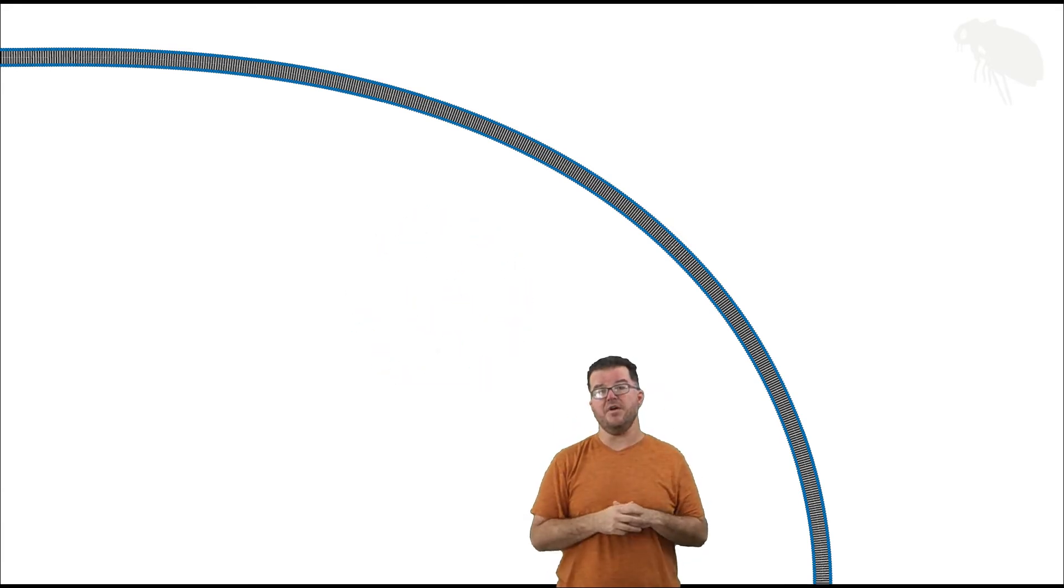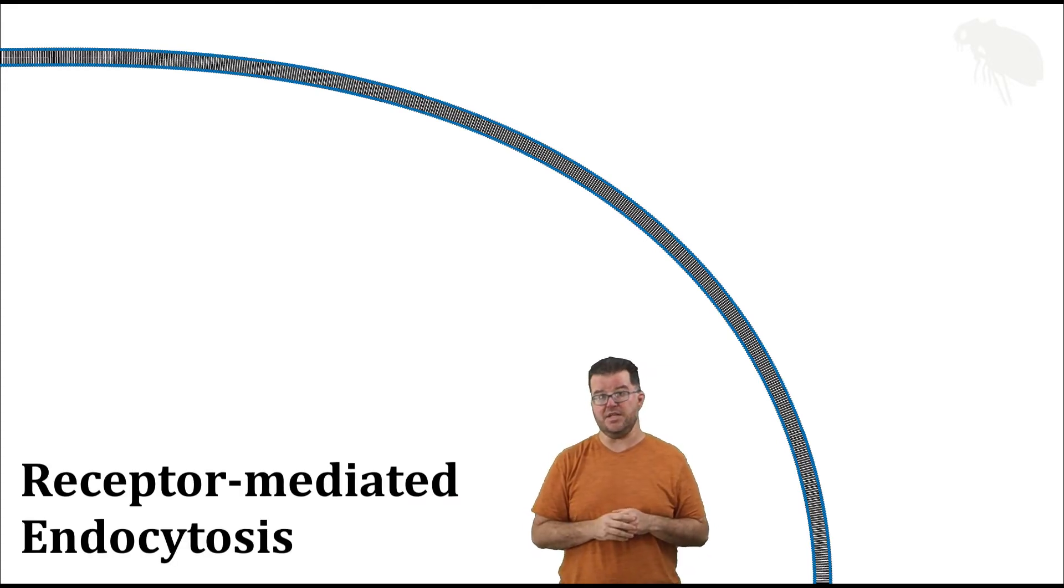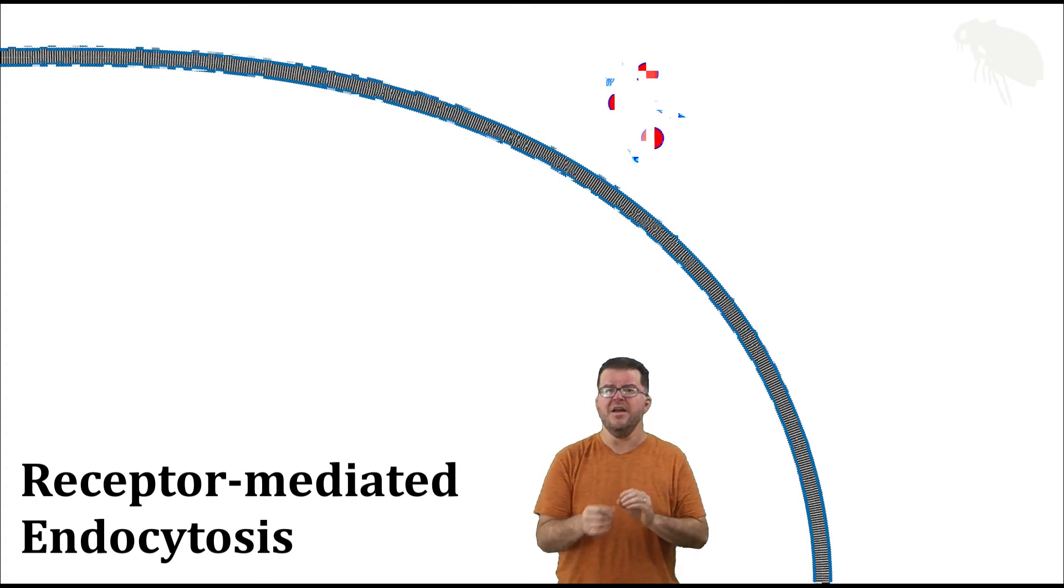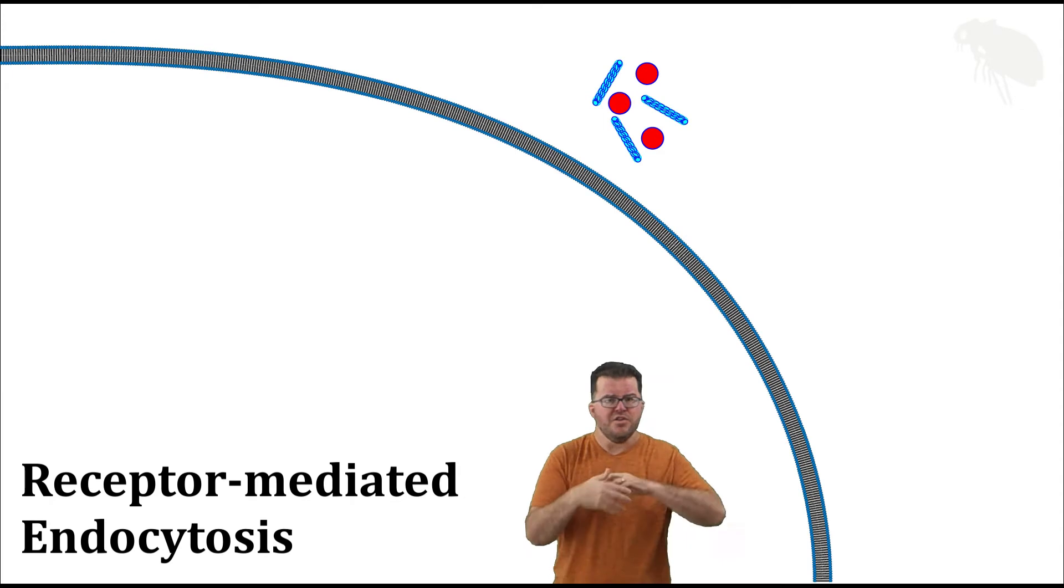The third type of endocytosis is called receptor-mediated endocytosis. Now, at a glance, it looks superficially similar to pinocytosis, but with an important distinction. If you look at that mass of fluid again, there are a couple different molecule types up there. Maybe the cell's only looking to pull in a particular type of molecule in bulk.